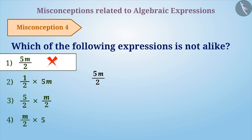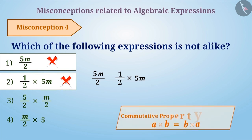Similarly, not understanding that division by 2 is the same as multiplication by 1 by 2, the answer 1 by 2 into 5m was given, which is also the wrong answer. Because of a lack of understanding of commutative property of multiplication, m by 2 into 5 is given as the answer.